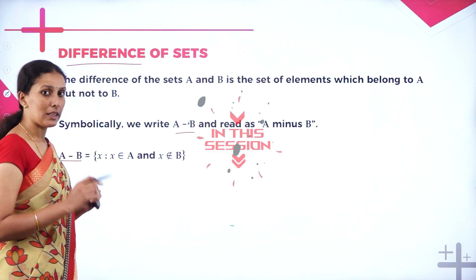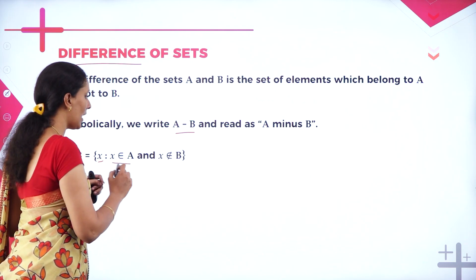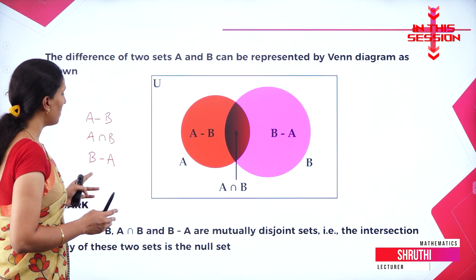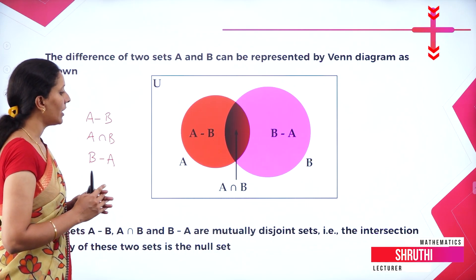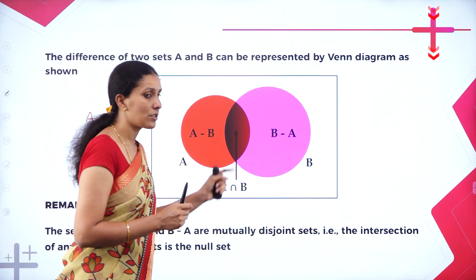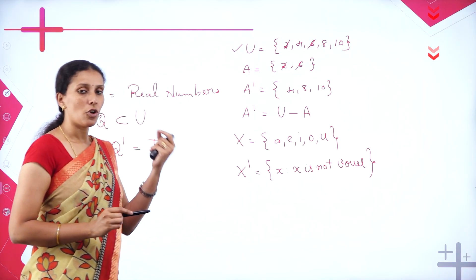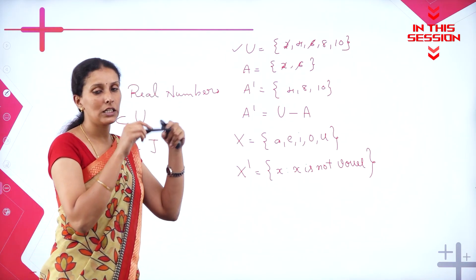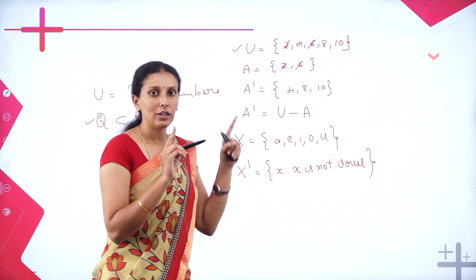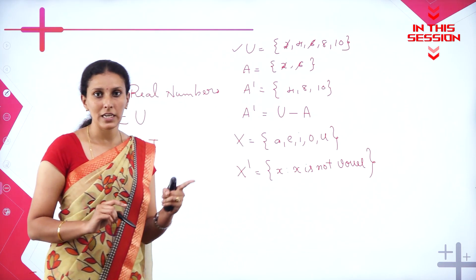A minus B means it is a collection of all elements only in A, not in B. A minus B, A intersection B, and B minus A are mutually disjoint sets because the intersection of any two of these sets will result in a null set. The elements which are not in A are present in the universal set, that's why we take U minus A. The difference U minus A gives you the complement of any set.